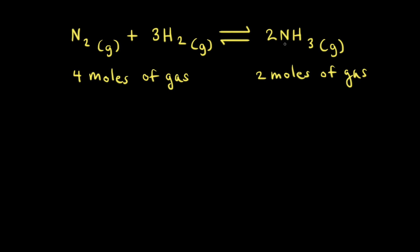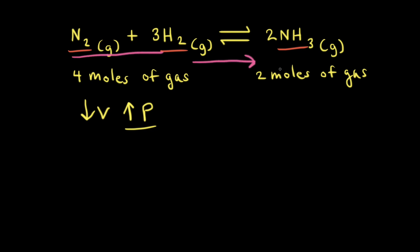Let's apply what we've learned to another reaction: the synthesis of ammonia from nitrogen gas and hydrogen gas. If we have a mixture of these gases at equilibrium and we decrease the volume, the decrease in volume causes an increase in pressure. According to Le Chatelier's principle, the net reaction goes in the direction that relieves the stress. There are four moles of gas on the left and only two moles of gas on the right, so the net reaction moves to the right, going from four moles of gas to two moles of gas, which decreases the amount of gas and causes a decrease in pressure.